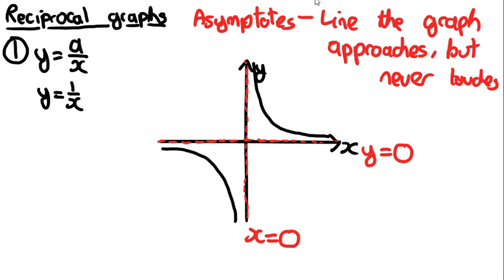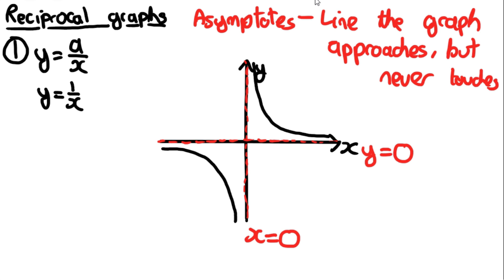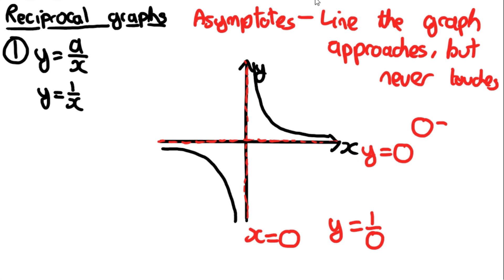Asymptotes exist because certain values are undefined. For example, x cannot equal 0 because that would mean dividing by 0, which is not defined. However, x can approach 0 — it can equal 0.001 — so the graph approaches the line but never actually reaches it. Similarly, y cannot equal 0 because there is no value for which 1/x = 0; it can approach 0 but never equal it.